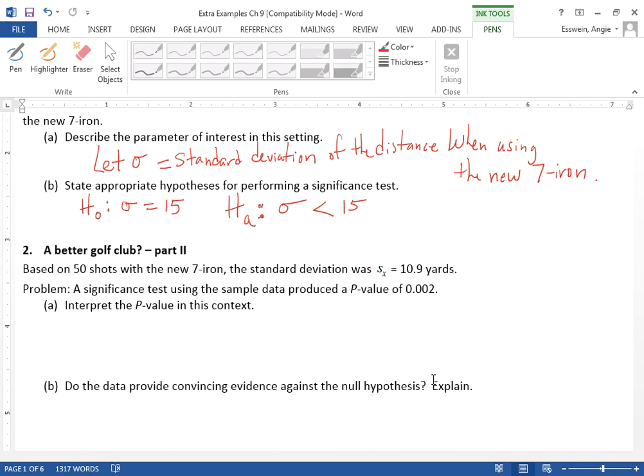So what the p-value tells you is that if we assume the real standard deviation is 15, it tells you the likelihood that we would get that outcome with our sample. It tells you the likelihood that we would actually get 10.9 yards if the real true standard deviation was 15. So how likely is that to happen?